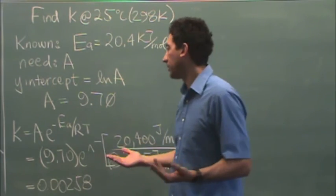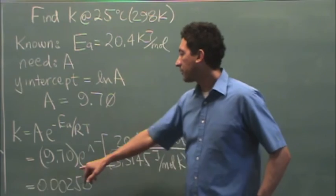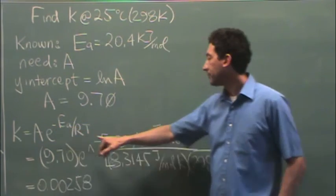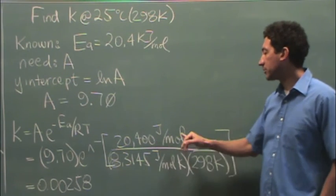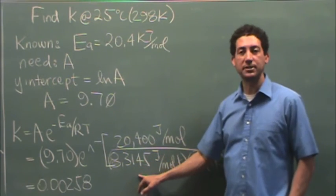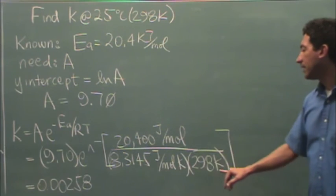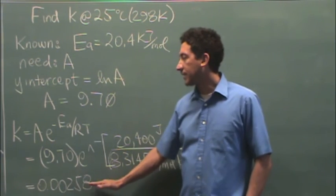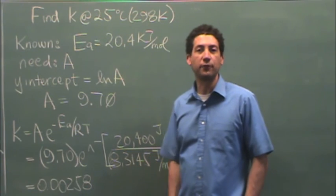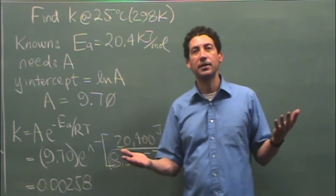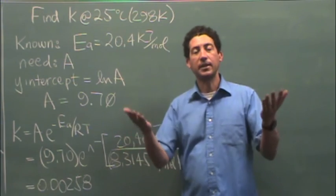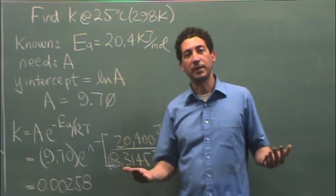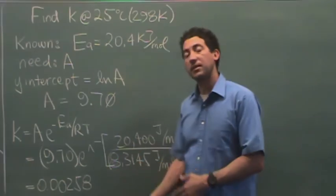And then it's pretty straightforward. So here's the Arrhenius equation with A, e raised to the negative activation energy, 20,400. Make sure it's in joules because your R is in joules, 8.3145. And then we have 298 K. And then in this case, I got a k at 0.00258, which is between the two rate constants that I mentioned earlier that were between 20 degrees and 30 degrees, the two that I have measured. So this makes a lot of sense.